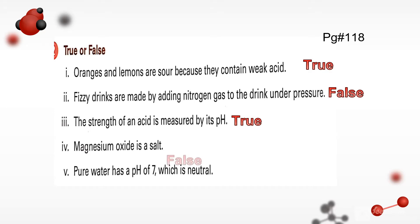Magnesium oxide is a salt - it's a false statement because magnesium hydroxide is a salt, not magnesium oxide. Pure water has a pH of 7 which is neutral - it's a true statement.